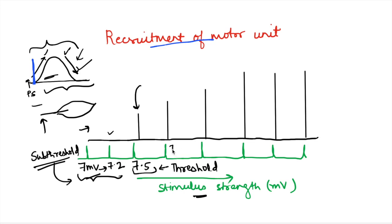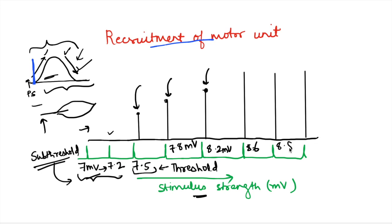At around 7.8 mV we see that the height — the strength of contraction — has increased compared to the first twitch. Then at 8.2 mV, the strength of contraction has increased further. So as we increase from 7.8 to 8.0 to 8.2 mV, the strength of contraction keeps increasing.